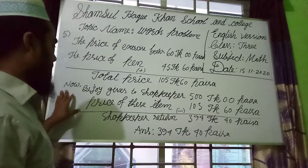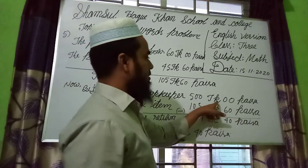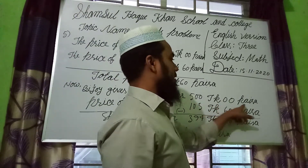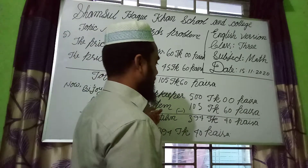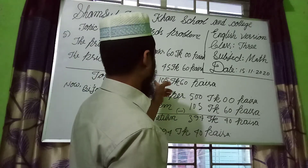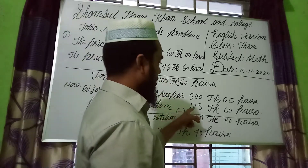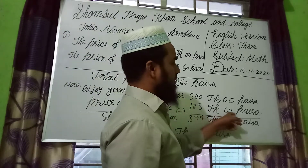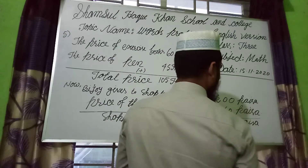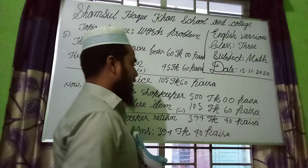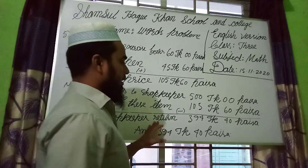Now the second step. Vijay gives the shopkeeper 500 Taka 00 Paisa. The price of the items is 105 Taka 60 Paisa. The shopkeeper will return the remainder, so this will be subtraction.